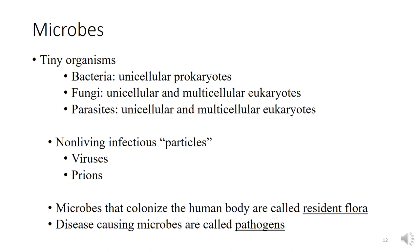Microorganisms are tiny organisms. Bacteria are unicellular and prokaryotes. Fungi and protozoa can be unicellular or multicellular organisms. Viruses are non-living things, and prions are infectious proteins — we will not be covering prions in this lecture, but we will look at viruses.